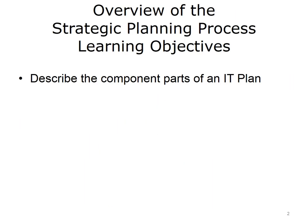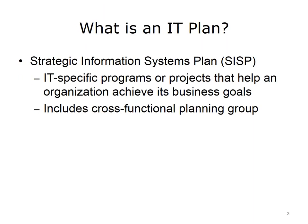The objective for this lecture is to describe some of the typical component parts of an IT plan. An IT plan, sometimes called a Strategic Information Systems Plan, is a set of IT-specific programs or projects that help an organization achieve its business goals. Strategic Information Systems Planning is done with a group of cross-functional — meaning clinical, business, IT, and administrative staff. Often, people refer to the output of this process as simply the IT plan of an organization.